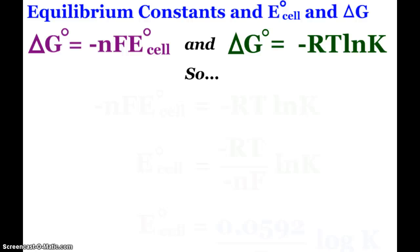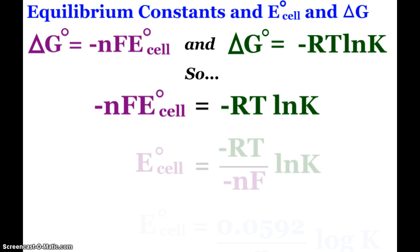We just mentioned what delta G is equal to, negative NFE of the cell, and last unit we talked about delta G being equal to negative RT natural log of our equilibrium constant. Naturally, those two things are equal to each other. What we can do, solving for E-naught of our cell, you see that it becomes negative RT over negative NF times the natural log of our equilibrium constant.